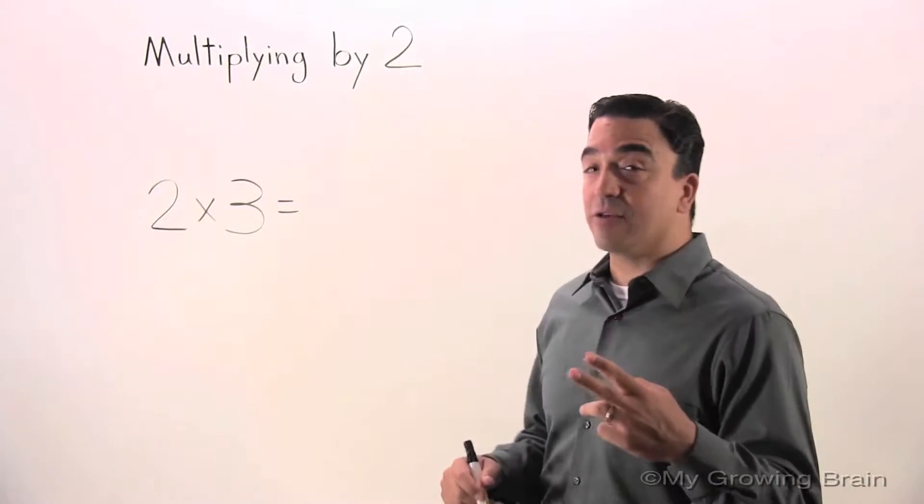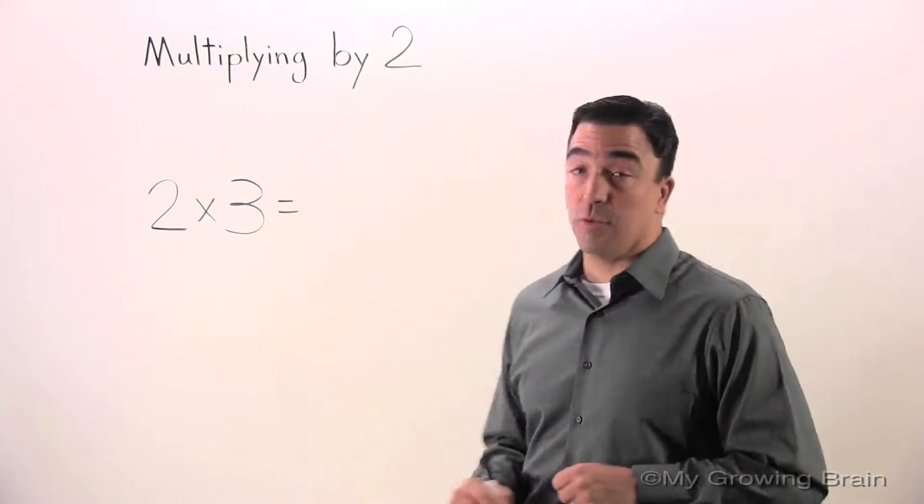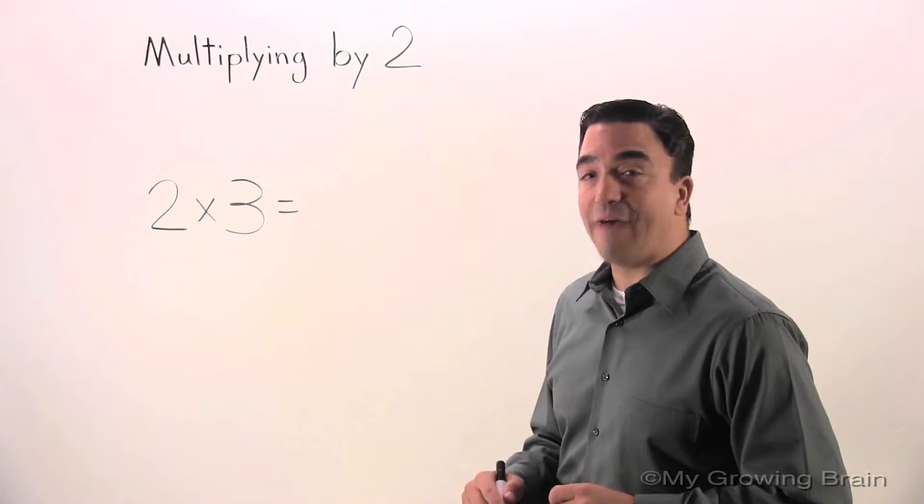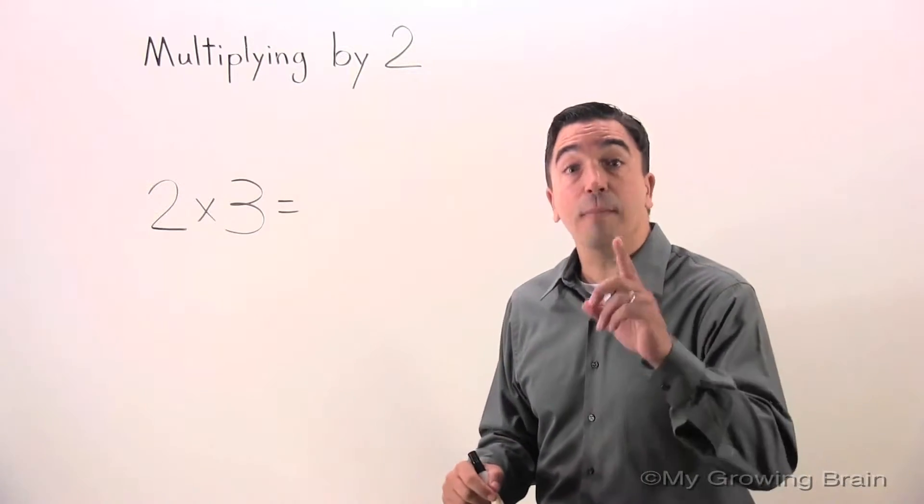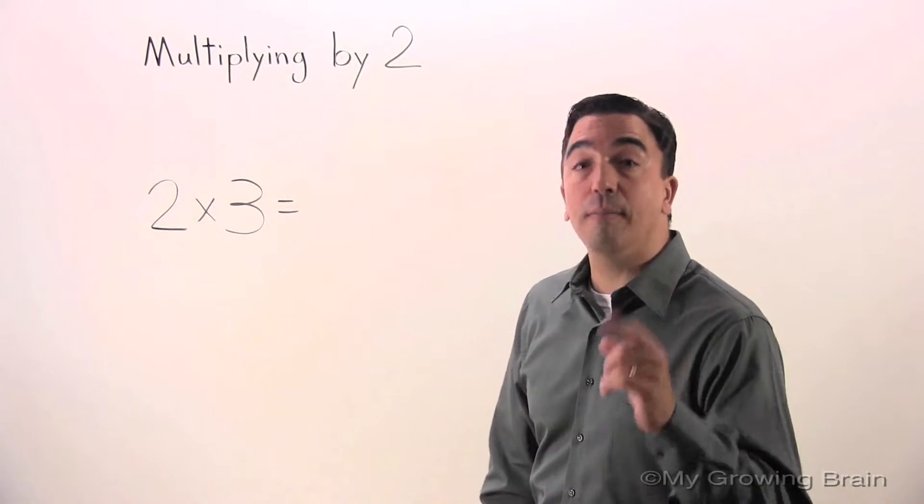You'll notice on the board I have two factors. I have the factor 2 and I have the factor 3. We're going to multiply these two factors to get a product. The product is the answer to a multiplication problem.